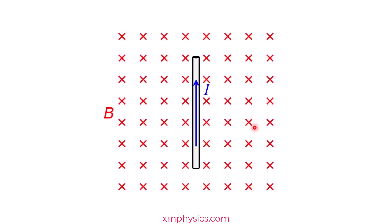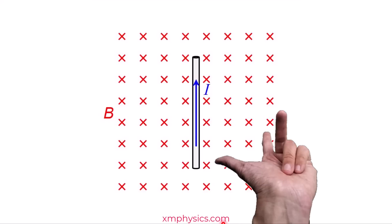Try to apply Fleming's left hand rule to this scenario. When the magnetic field is into the page and the current is upward, what is the direction of the magnetic force experienced by this rod? First, point your index finger in the direction of the magnetic field — into the screen. Then rotate your middle finger until it's pointing upward. Your thumb is now pointing leftward. So that's the direction of the magnetic force.